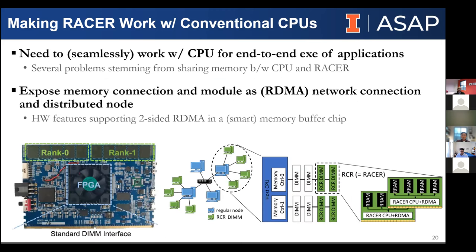Another challenge: to communicate with the RACER chip from the CPU, we need some programming API. Software developers don't want to change application code. By approaching this from the system side and leveraging the smart memory buffer chip, we can add a two-sided RDMA capability — there's a lot of source code based on the RDMA programming model. Supporting RDMA capability with a conventional CPU integrated within the buffer chip can make the application transparent to this specific architecture.